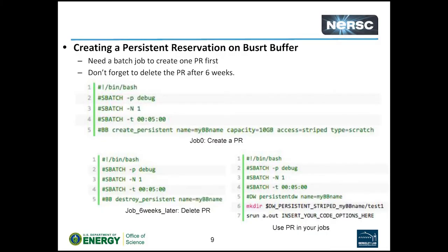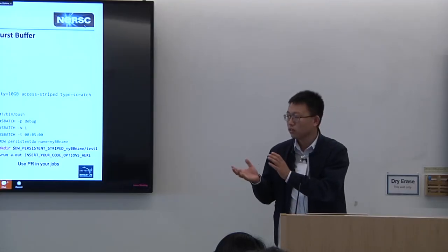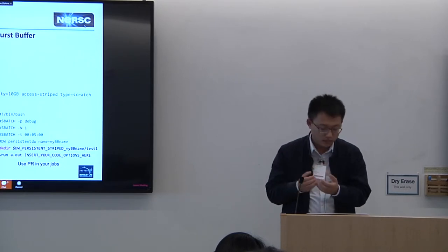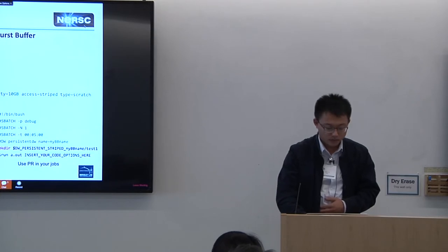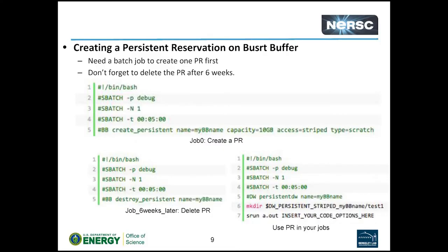Note that the burst buffer space will disappear when your job exits. If you want a longer-lasting burst buffer space, you can create a persistent reservation. To create this reservation — owned by you or a group of users — you submit a job specifying the capacity, access mode, type of space, and a name. You then use that name as your burst buffer tag in subsequent jobs. Don't forget to delete this reservation after six weeks, which is how long we can guarantee the data is safe.